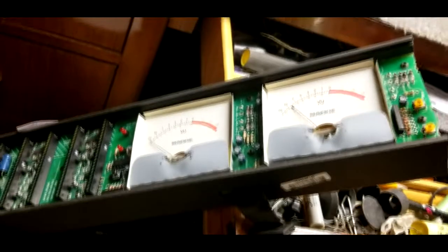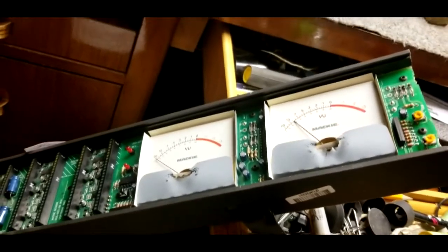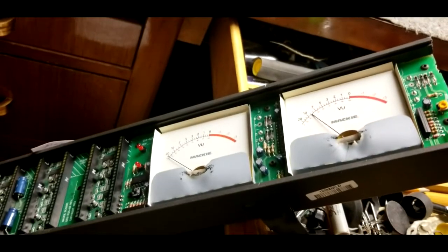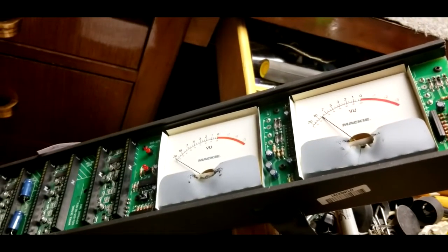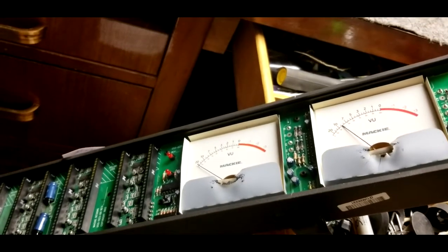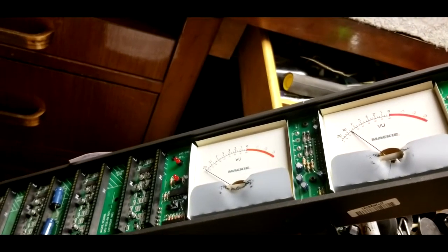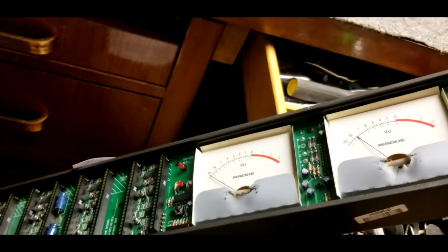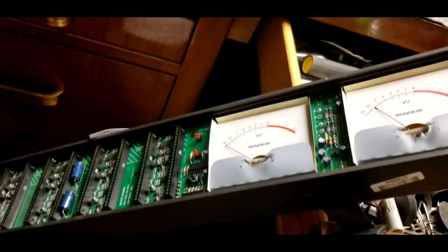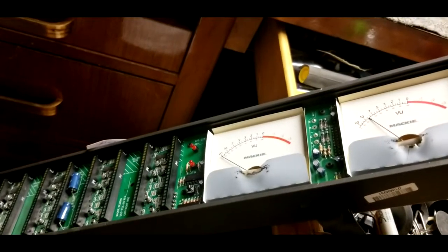The schematics for this seem to be on the Mackie support page. You drill down on the support page to schematics and then select mixer. Under the mixer menu, there's analog 8-bus mixers. There's a bunch of PDFs under there and about three of them are labeled meter.